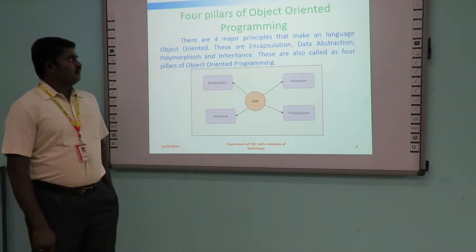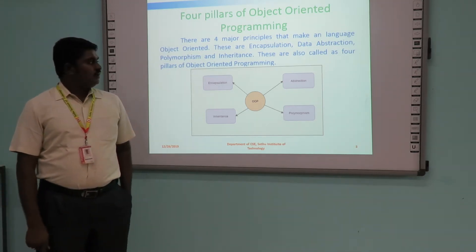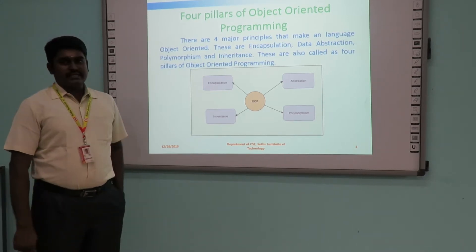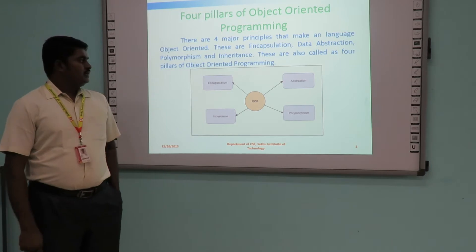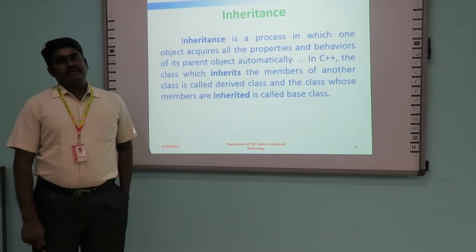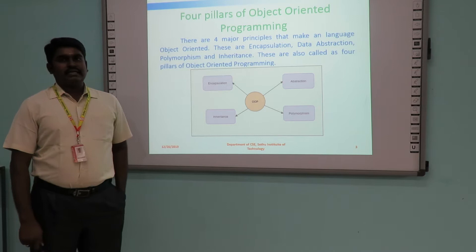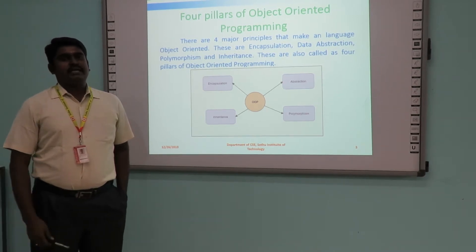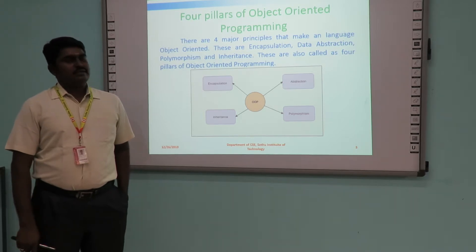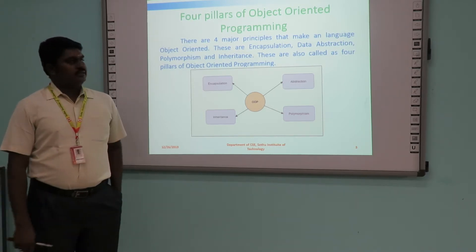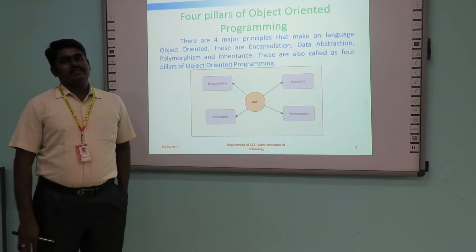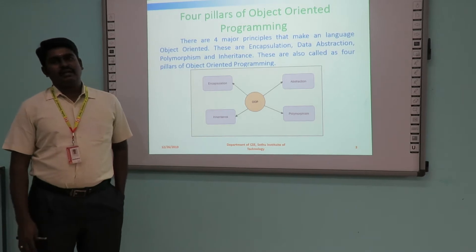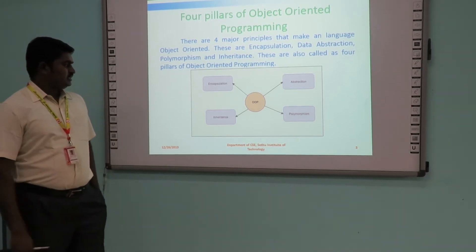The four pillars of object-oriented programming are: one is encapsulation, next one is abstraction, third one is inheritance, and fourth one is polymorphism. Encapsulation is nothing but the data — both data members and member functions — encapsulated within the class. Abstraction is nothing but hiding some irrelevant details and showing the relevant details.